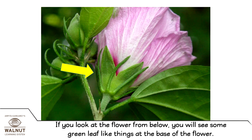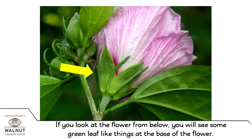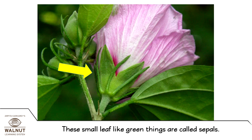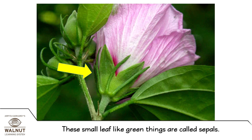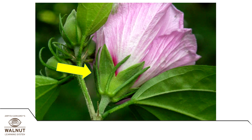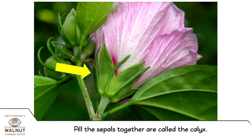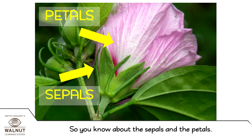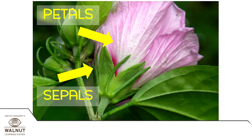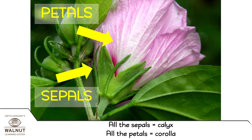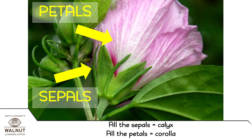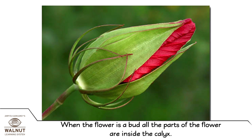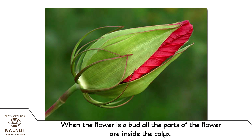If you look at the flower from below, you will see some green leaf-like things at the base of the flower. These small leaf-like green things are called sepals. All the sepals together are called the calyx. So you know about the sepals and the petals: all the sepals together equal the calyx, and all the petals together equal the corolla. When the flower is a bud, all the parts of the flower are inside the calyx.